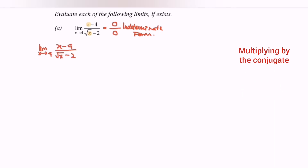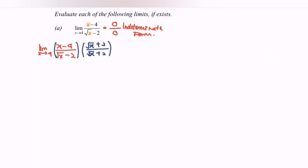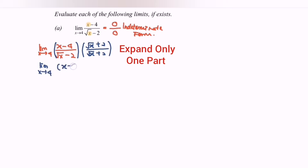Now I'm going to multiply with the conjugate. Let's focus on the denominator — we have square root of x minus 2, and the conjugate will be square root of x plus 2. Next we are going to expand, focusing only on the denominator. So limit when x approaching 4: bracket x minus 4, bracket square root of x plus 2, over the denominator which will be x minus 4.